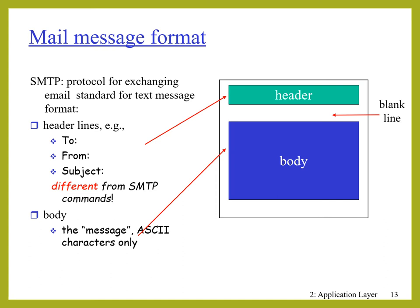SMTP is a protocol used for exchanging email as a standard text message format. There is a header part and a body part. Inside the header part we have data like To, From, and Subject — and it should be different from the SMTP commands. In the body of the SMTP message, it contains the message of the email in ASCII characters only. This SMTP protocol is used for transferring simple text messages.